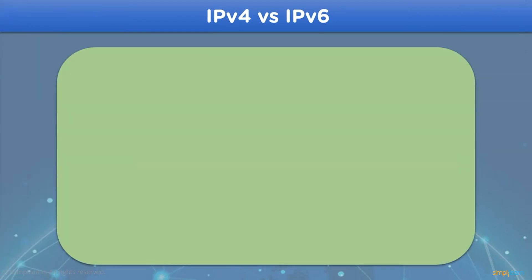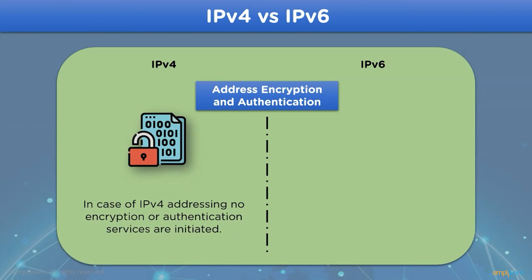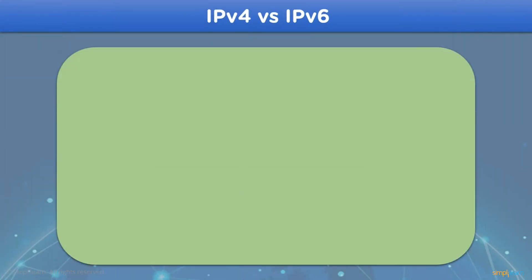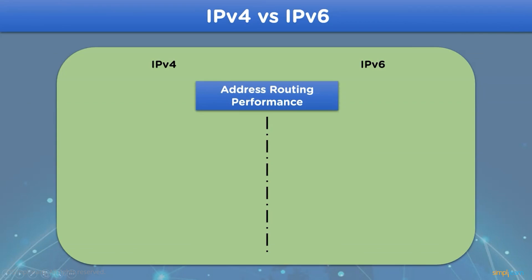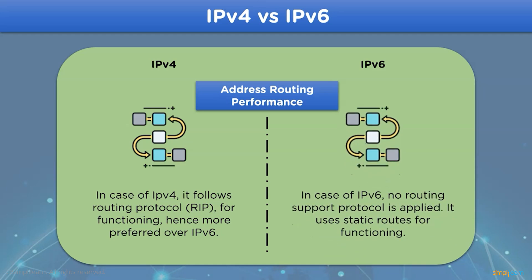The next difference is encryption and authentication settings. IPv4 version does not provide any encryption or authentication services for the network. IPv6 addresses do provide mandatory encryption and authentication services for its addresses. Moving on, we have address routing and performance. IPv4 version follows the RIP routing protocol for network configuration and is preferred over IPv6 version, whereas IPv6 does not follow any routing protocols and uses static routes for network functioning.